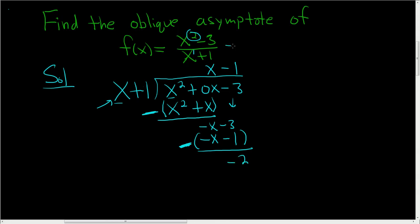So this function can be rewritten as the quotient plus the remainder over the divisor. But you don't need to do all of that. It's right there. So the oblique asymptote is y equals x minus 1.